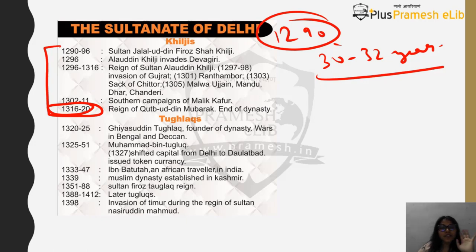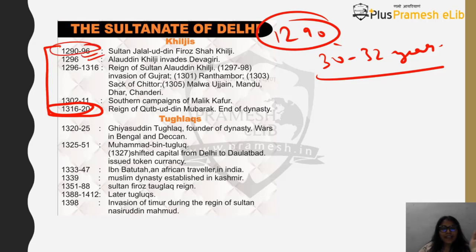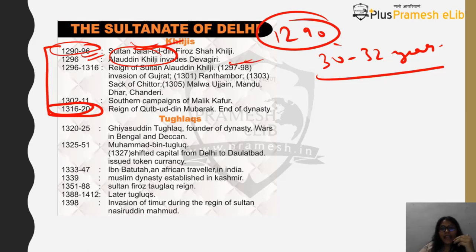An important clarification: Alauddin Khilji was not the son of Jalaluddin Khilji — this question was asked in a state civil services exam and people got it wrong. Jalaluddin Khilji was the uncle of Alauddin Khilji. In 1296, Alauddin Khilji invaded Devagiri and became the Sultan after Jalaluddin's six-year rule from 1290 to 1296.